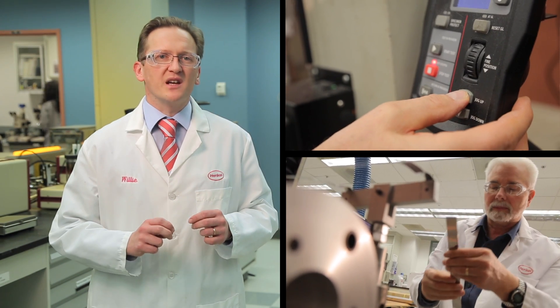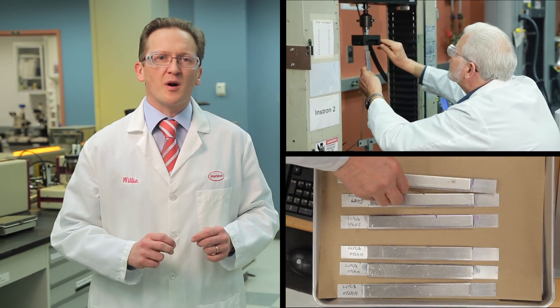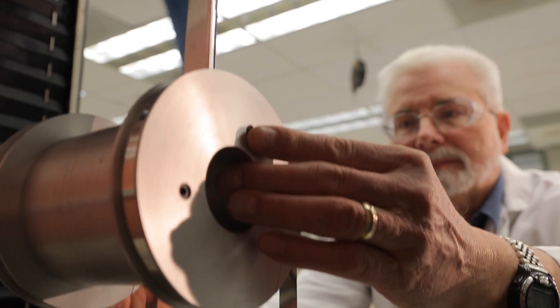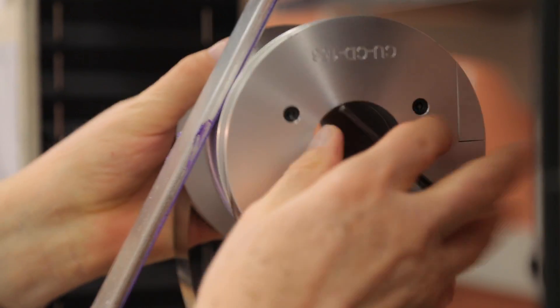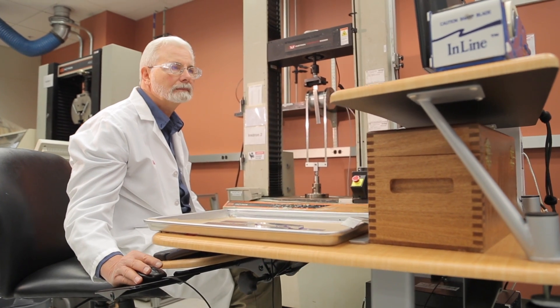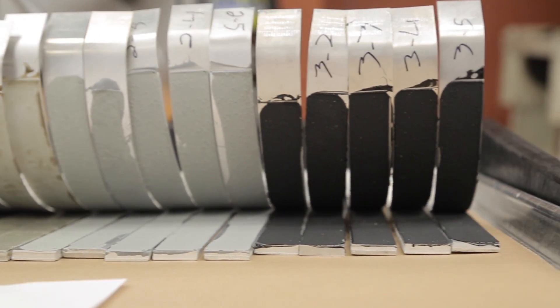A bonded assembly is secured in the climbing drum peel fixture in a mechanical properties tester. As the crosshead moves upward, the flexible substrate is wrapped around the drum fixture, peeling it away from its rigid mate. The test can be run using only the flexible substrate and this value is subtracted from the combined result to provide the peel strength of the adhesive alone.